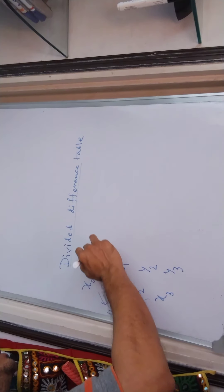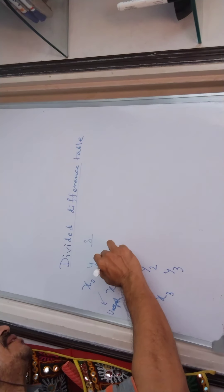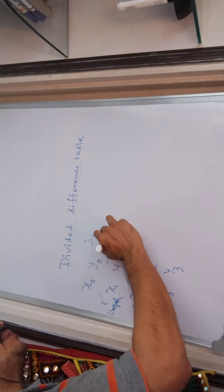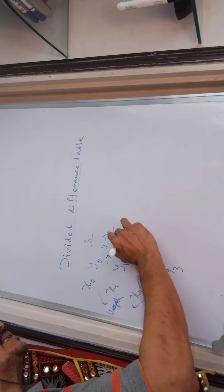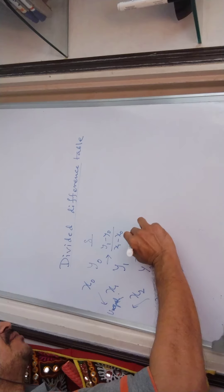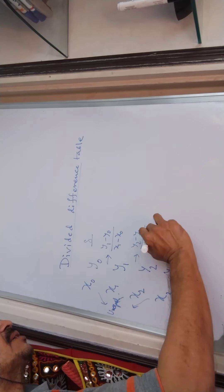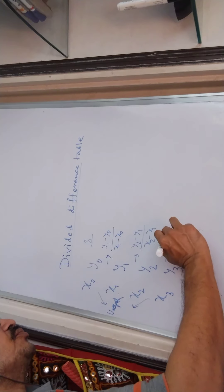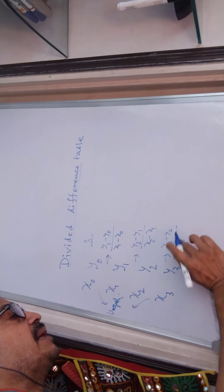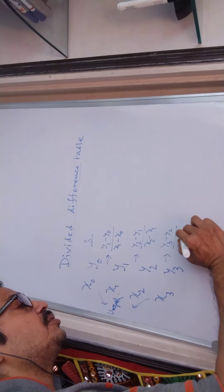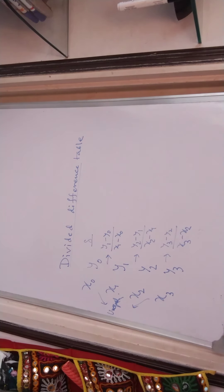What is it all about? It is represented as small delta. We represent the first difference as y1 minus y0 divided by x1 minus x0, then y2 minus y1 by x2 minus x1, and y3 minus y2 by x3 minus x2. That is divided difference — we take the ratio of differences between successive nodes.